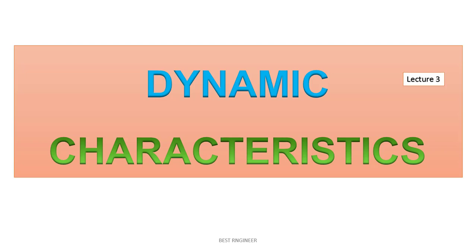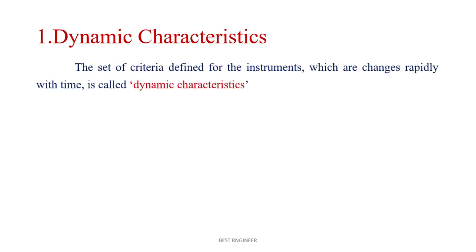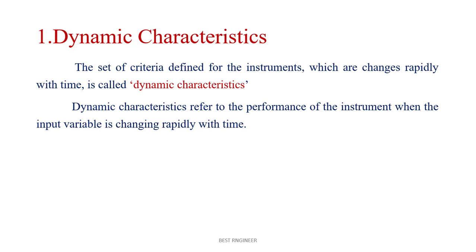In this video, let me see the dynamic characteristics of measuring instruments. The set of criteria defined for instruments which change rapidly with time is called dynamic characteristics. Dynamic characteristics refer to the performance of the instrument when the input variable is changing rapidly with time.